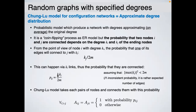One small problem: if degrees are very large, this value can exceed one and is no longer strictly a probability — it represents the expected number of edges between two nodes. In sparse real networks degrees are not too large, so this is usually acceptable. If the value is above one, it's treated as one, meaning those nodes are always connected.